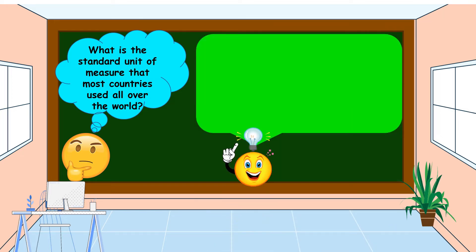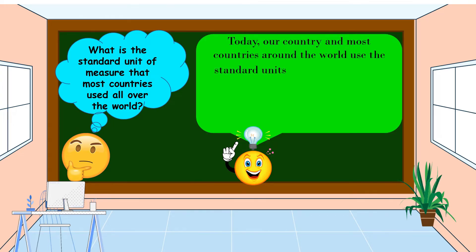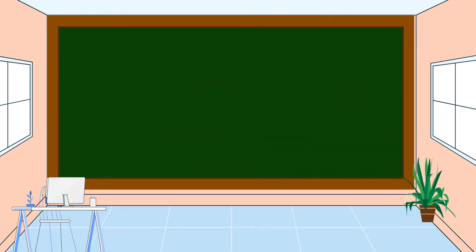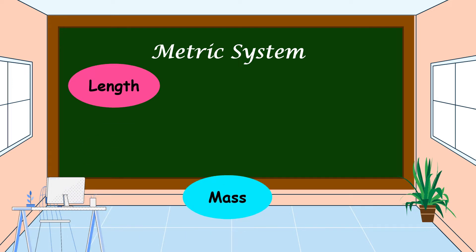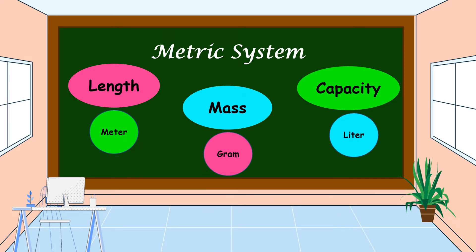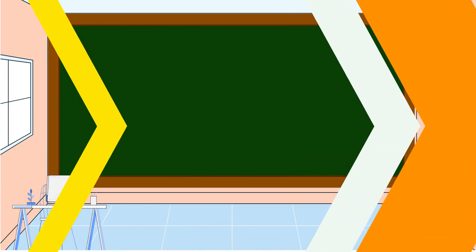Our country and most countries around the world use the standard units in the metric system. The metric system is based on 10, that is why each unit is either 10 times larger or 10 times smaller than the unit next to it. In the metric system, the basic unit for length is meter, for mass is gram, and for capacity is liter.